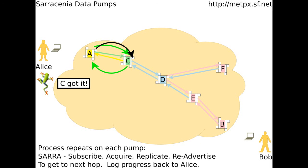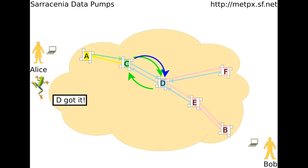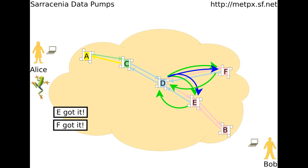Pump C is listening, or subscribed, to pump A. Since it knows the way to B and F, it fetches the folder from A, and then lets its neighbors know that Alice's folder is on C, and trying to get to B and F. This process repeats. The arrows are blue where HTTP is used instead of SFTP to transfer the data. Pumps may use different tools, but Alice does not worry about it. The forwarding is set up once by administrators, and works for anyone's future data going through.